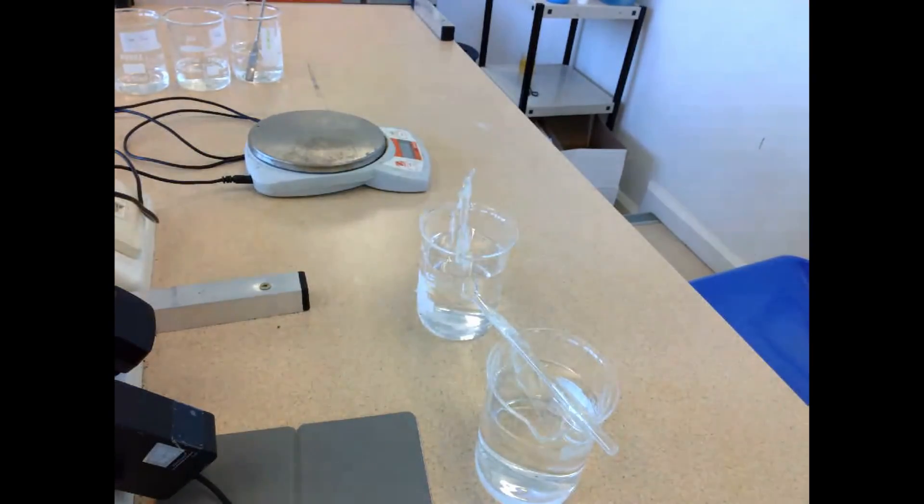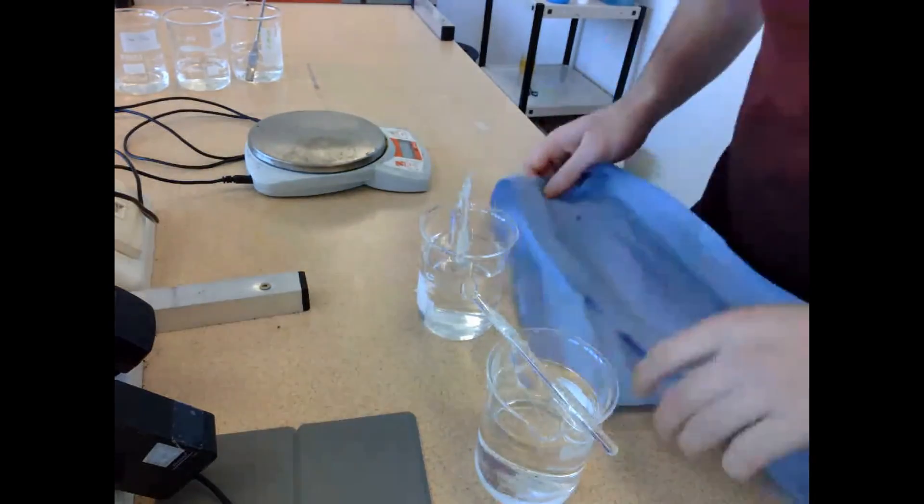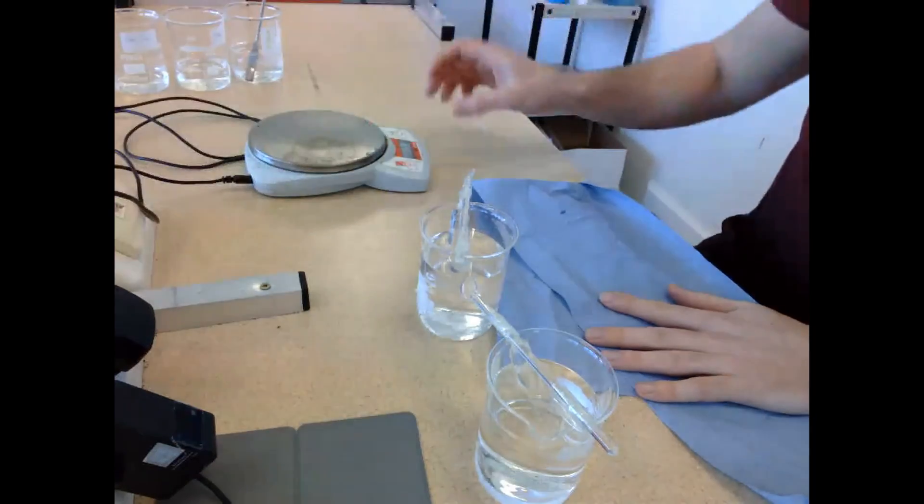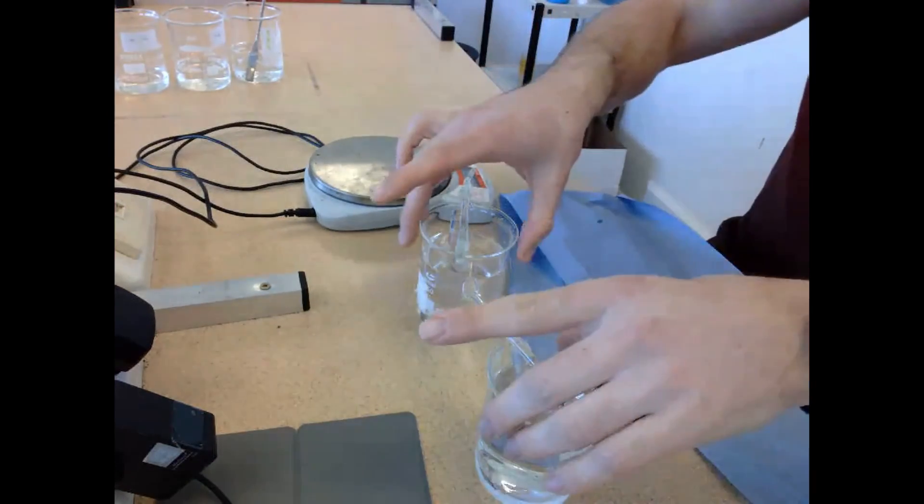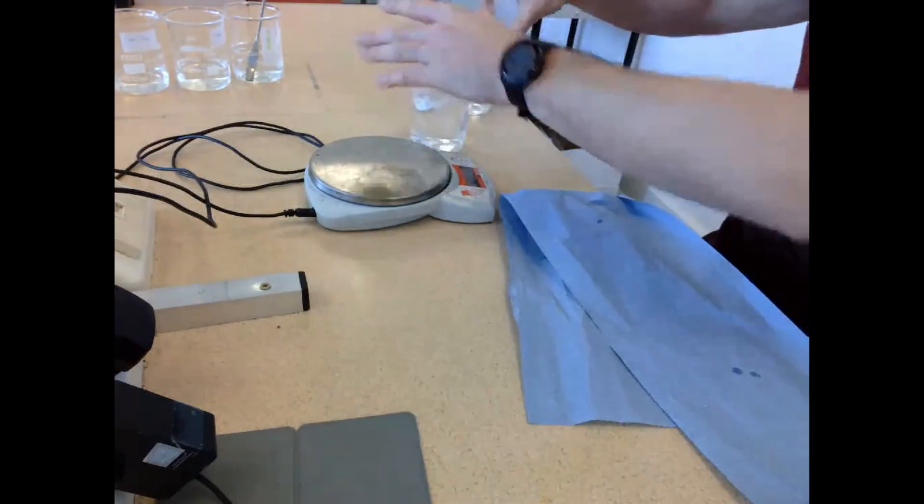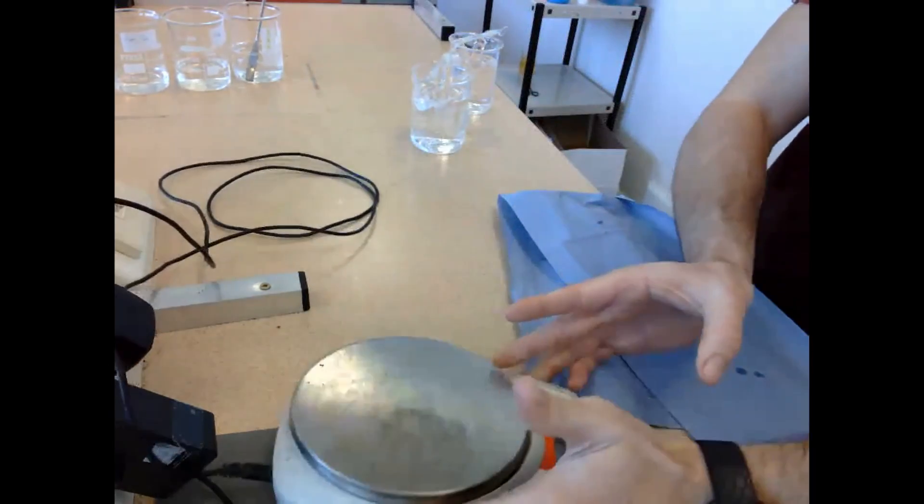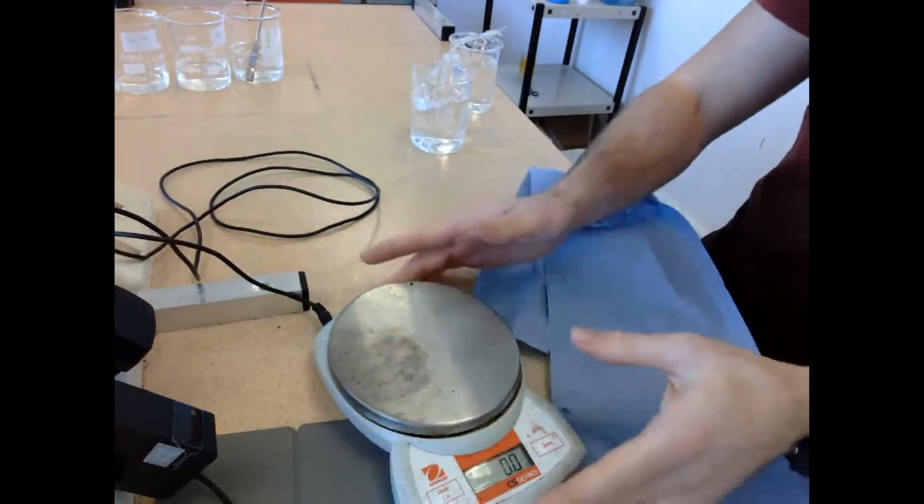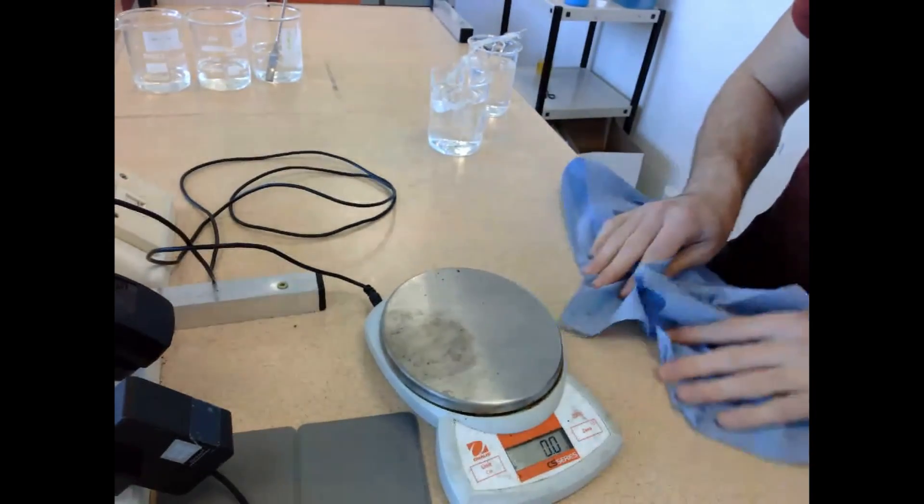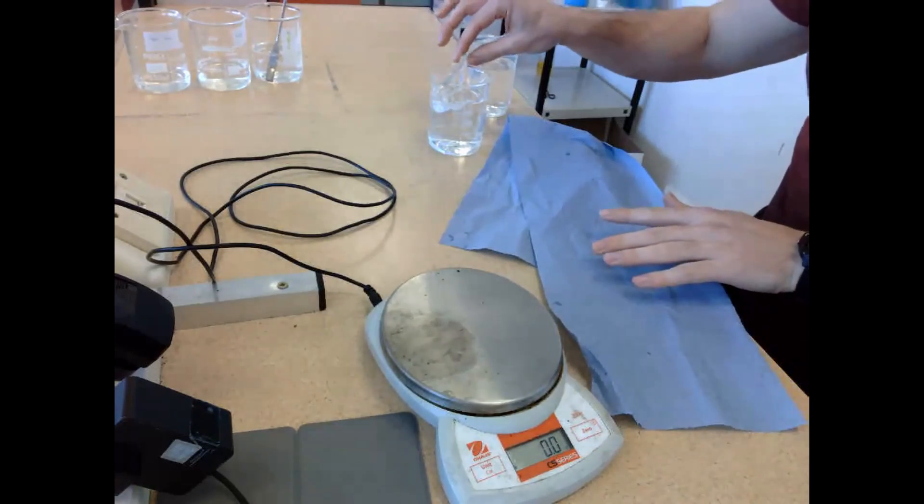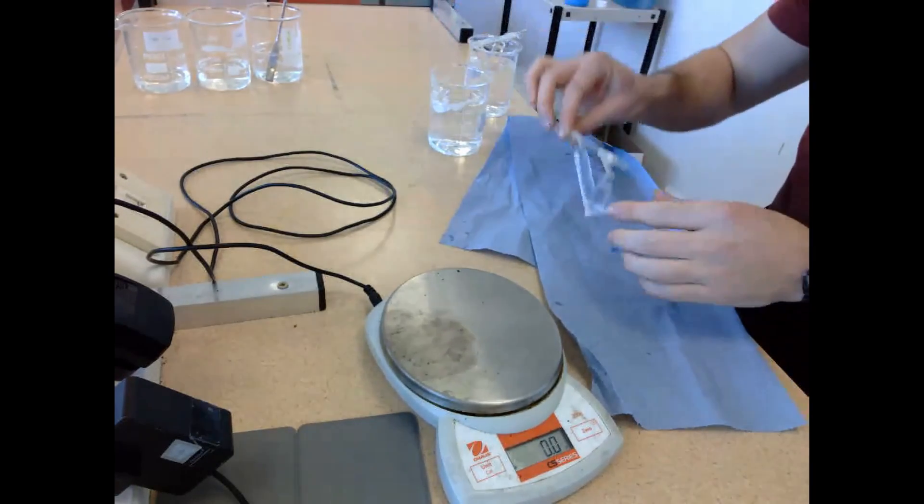After 15 minutes, I came back with some blue roll. Visking tubing A is going to go first. I'm going to take the glass rod off the beaker after I've placed the balance in front of the camera. I'm going to take it off, remove any sellotape, and dry it off.